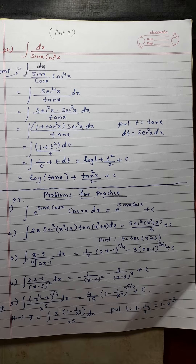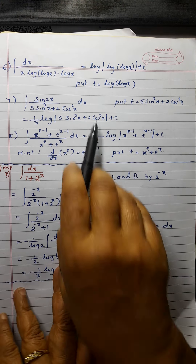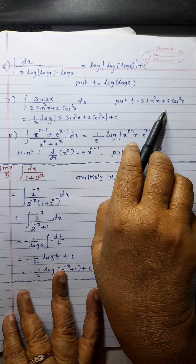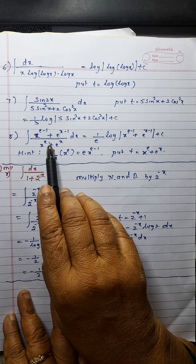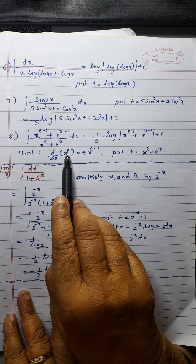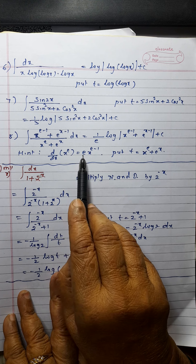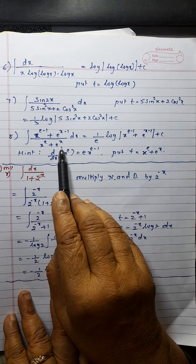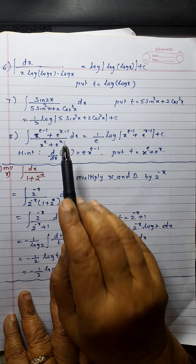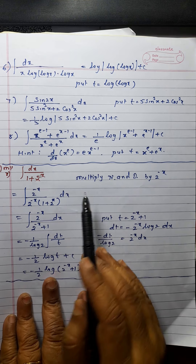Next problem. For the remaining problems, hints are given — you try. Here the hint is given: what you have to substitute. A similar problem I have solved. Here, x raised to e is of the type x raised to n, so its derivative is e x raised to e minus 1. Then substitute t equal to the denominator. Its derivative you will get with dx. Solve this problem — the answer is given.